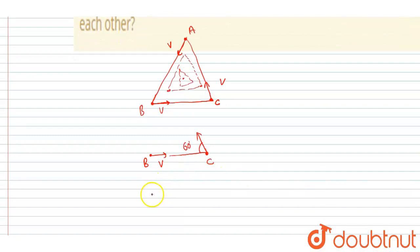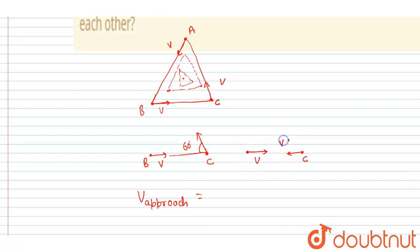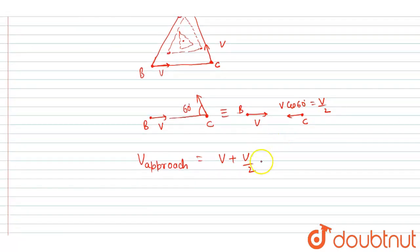The velocity of approach: B is moving toward C with velocity v, and C is moving toward B with a component of v cos 60 degrees, which is v/2. So the velocity of approach is v plus v/2, which equals 3v/2.